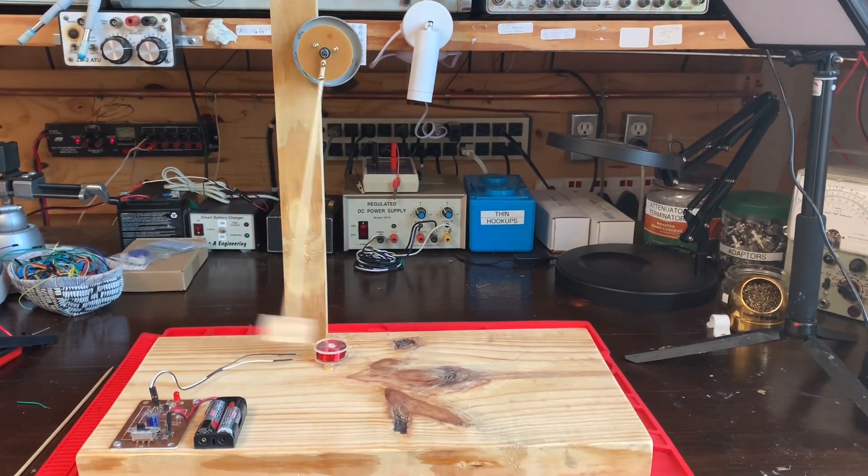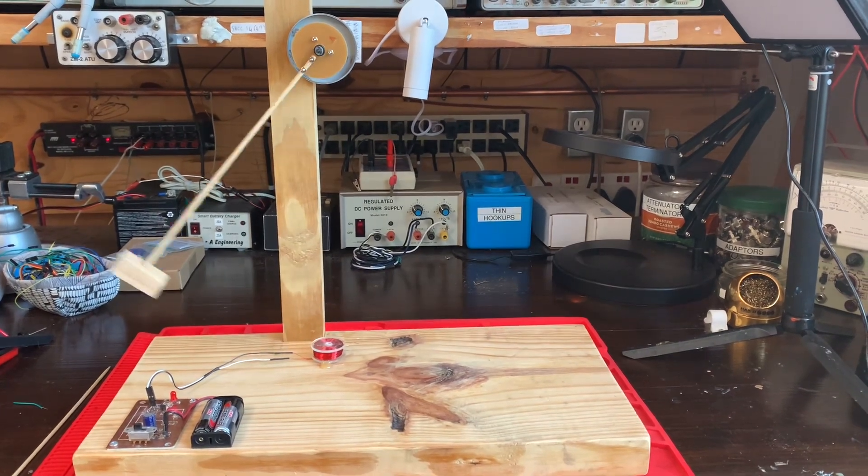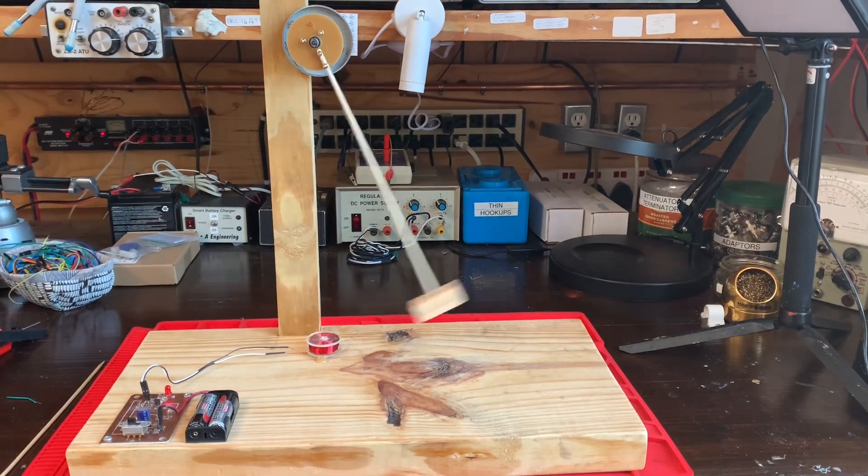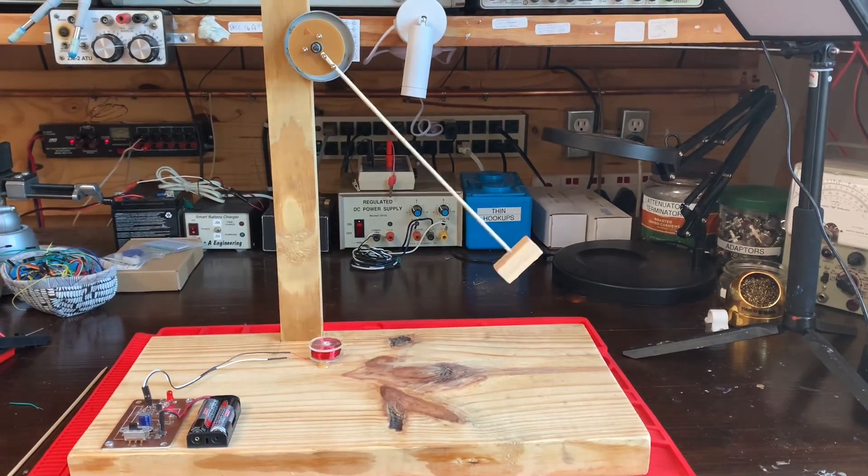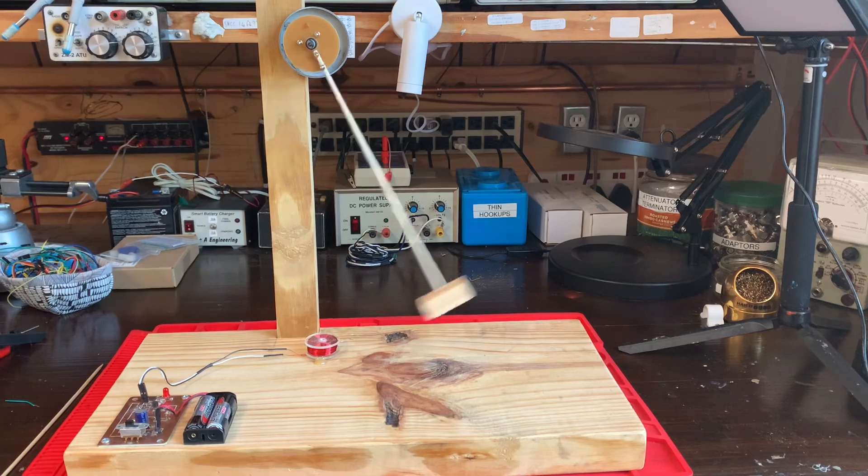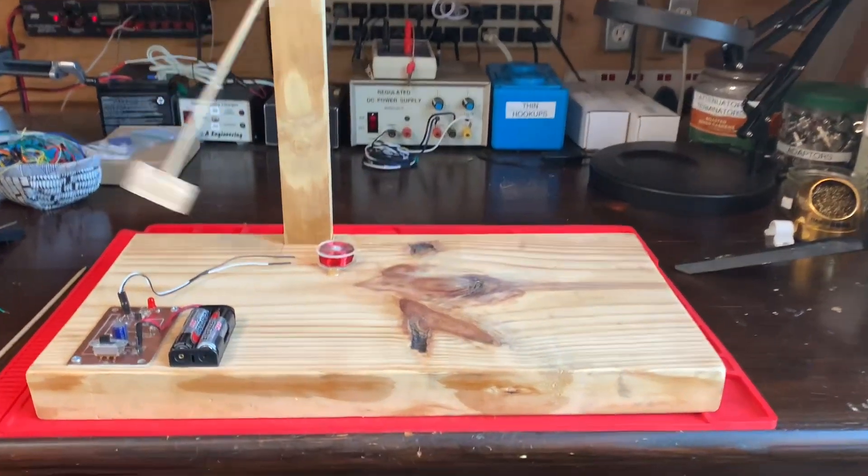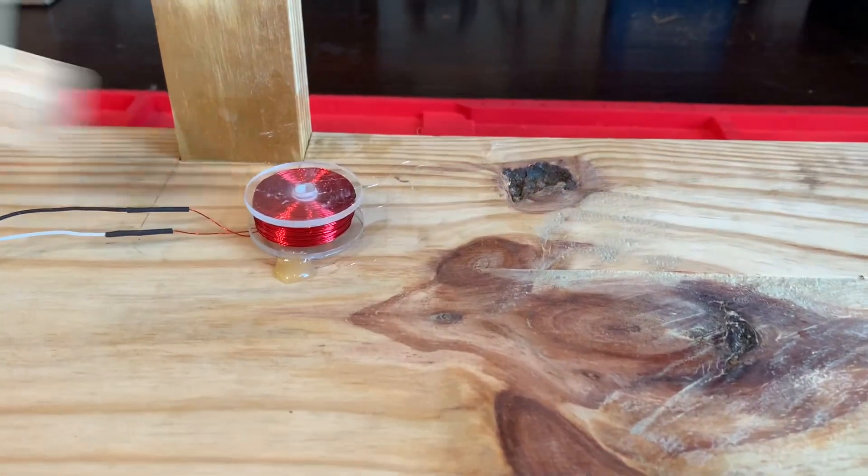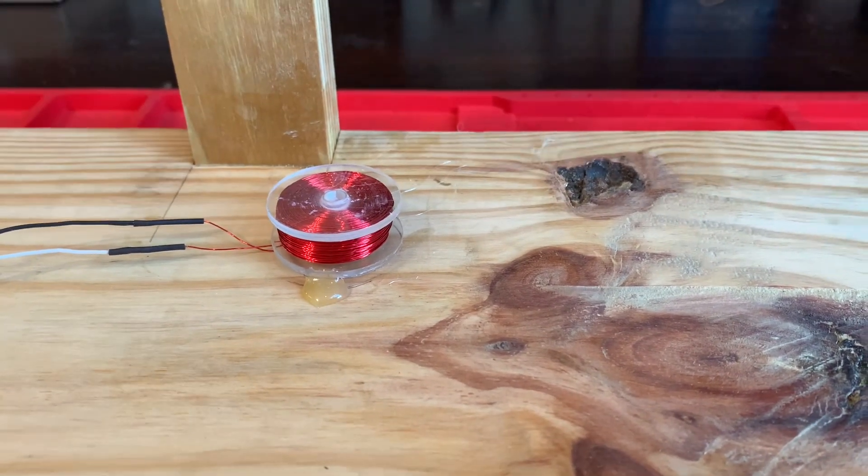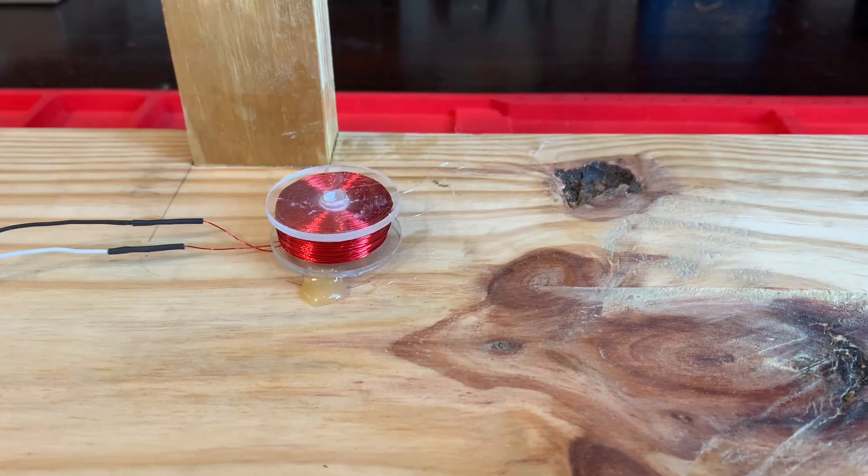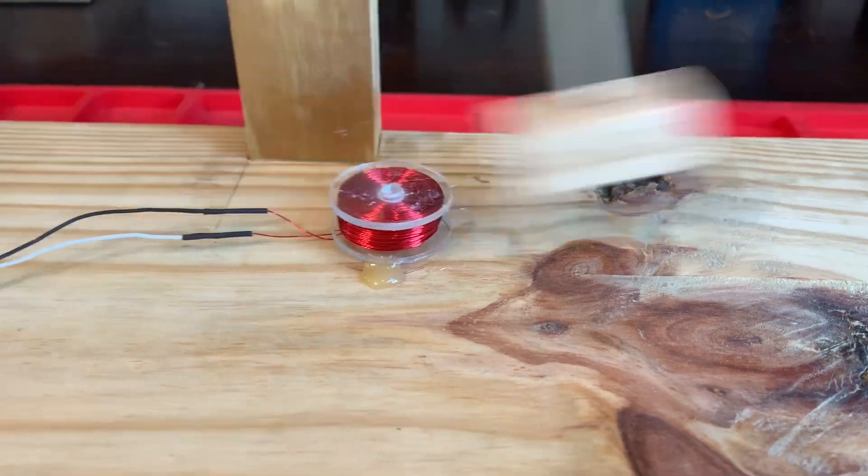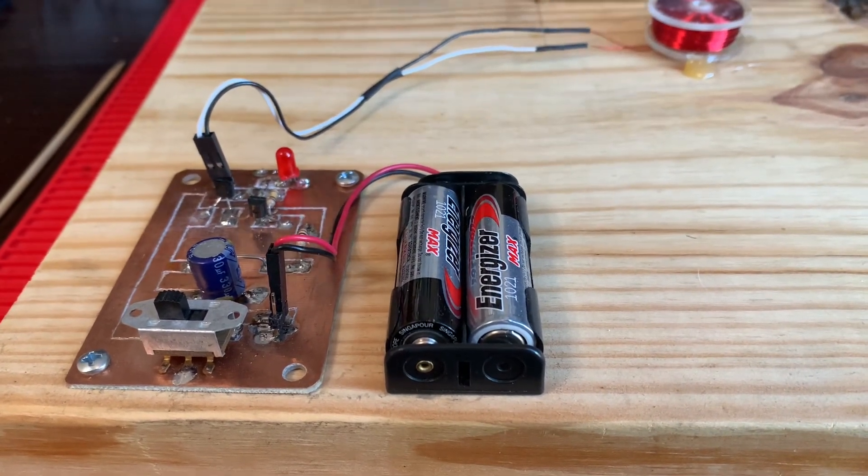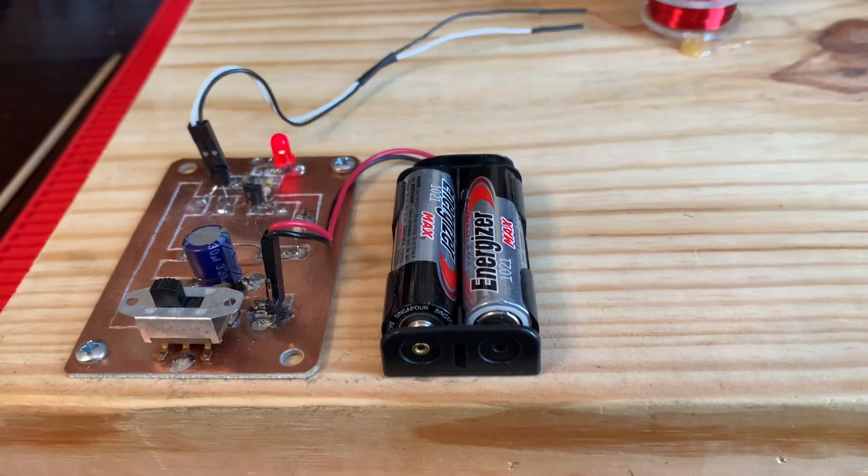This particular pendulum has an armature which is about 12 inches long, and glued to the end of the armature is a magnet. Below the magnet, as you can see, is a coil which consists of 800 turns of number 28 gauge wire. And then we have a small circuit which is driven by two 1.5 volt batteries.